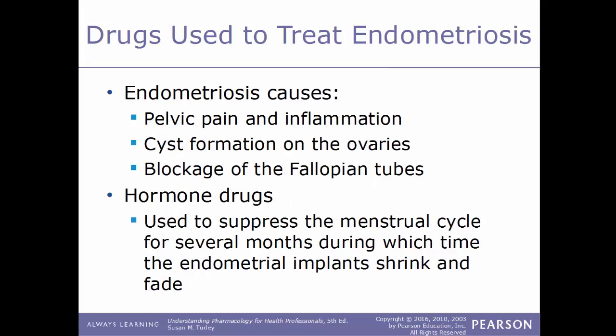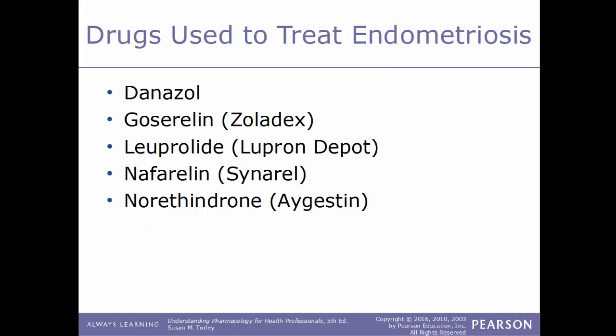Endometriosis can cause pelvic pain and inflammation, cyst formation on the ovaries, and blockage of the fallopian tubes. Drugs used to treat endometriosis are hormone drugs that suppress the menstrual cycle for several months, during which time the endometrial implants will shrink and fade. Examples include danazol, goserelin (Zoladex), leuprolide (Lupron Depot), nafarelin (Synarel), and norethindrone (Aygestin).